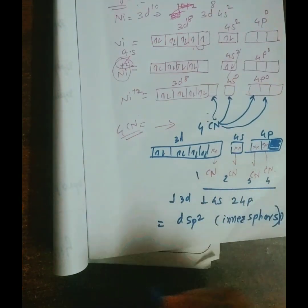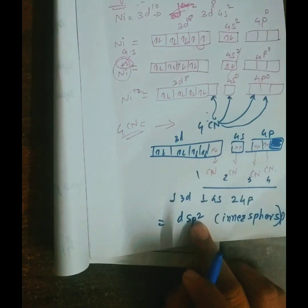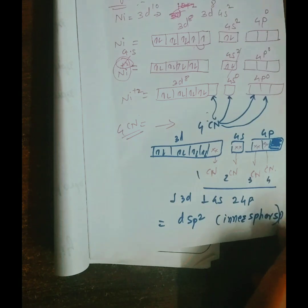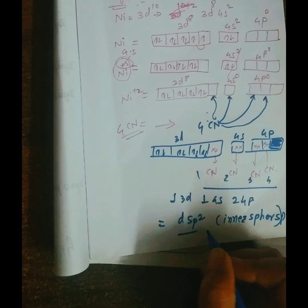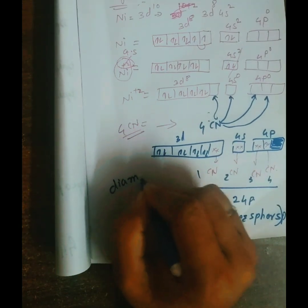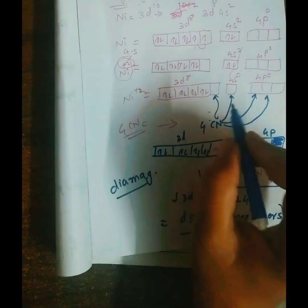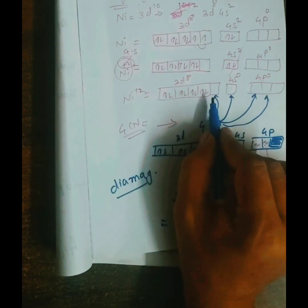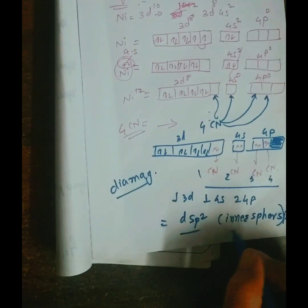And this is the inner sphere mechanism. Inner sphere mechanism, why? Because the 3d is used in the inner sphere mechanism. So this is dsp² hybridization and this is found to be diamagnetic in nature. Diamagnetic in nature because no single unpaired electron is present in the 3d orbital, so it is called the diamagnetic compound as well as the inner sphere compound.